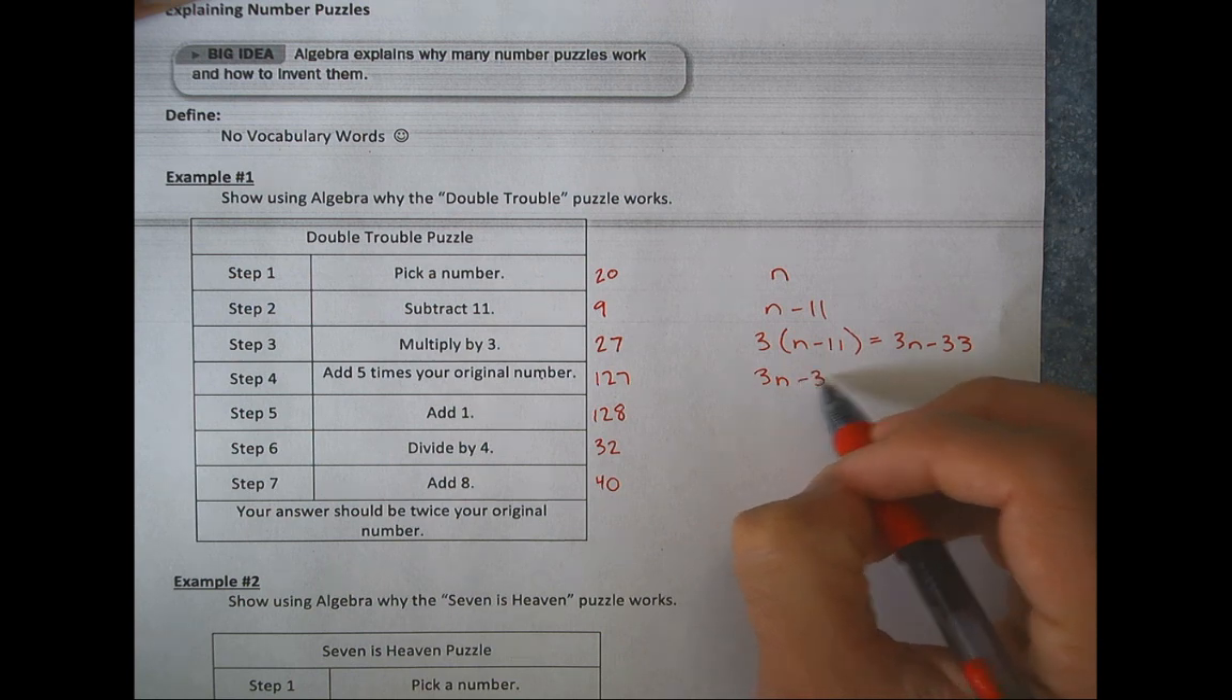Now we're going to add 5 times the original number. So we're going to take this term, 3N minus 33, and we're going to add 5 times the original number. The original was N. So we're going to add 5N. So what does that make? Well, we can combine like terms. So put those together and it's 8N and I still have minus 33. Now I've got to add 1. So I'm going to take my finished product here, 8N minus 33, and I'm going to add 1. If I simplify that, I can combine it with the minus 33. So I should have 8N minus 32. Positive 1 gets added to negative 33. I'm at negative 32.